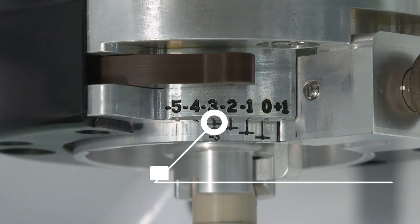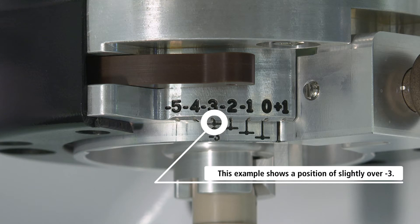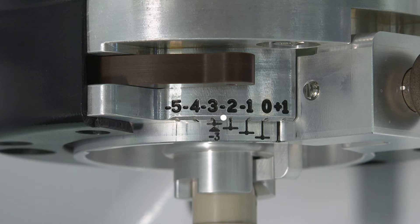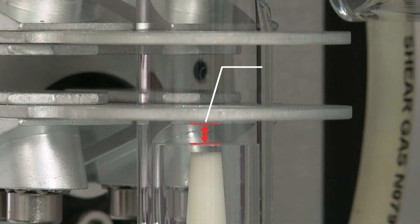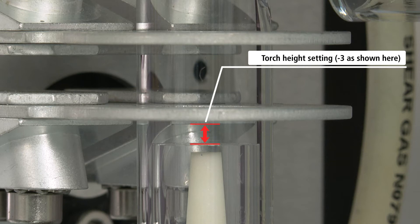Typical settings are minus 3 for aqueous samples and minus 4 for oils and organic analysis. This setting indicates the distance from the auxiliary tube of the torch, the inner tube, and is that many millimeters below the bottom RF plate.